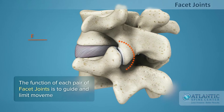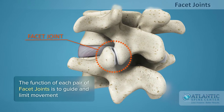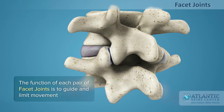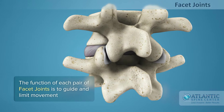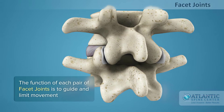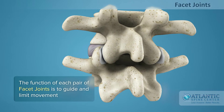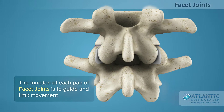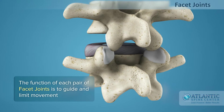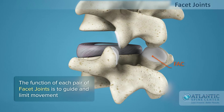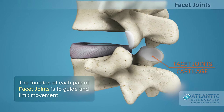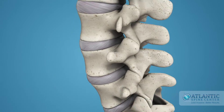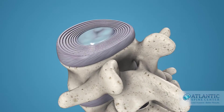Each disc works in concert with two facet joints, forming a spinal motion segment. The biomechanical function of each pair of facet joints is to guide and limit the movement of the spinal motion segment. The surfaces of the joint are coated with cartilage that helps each joint move smoothly.